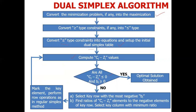But the right-hand side values will not be positive — they will be negative — meaning the solution is infeasible. We have to make them feasible. If both conditions are fulfilled — CJ minus ZJ less than or equal to zero and right-hand side values all non-negative — it means we have achieved the optimum solution.